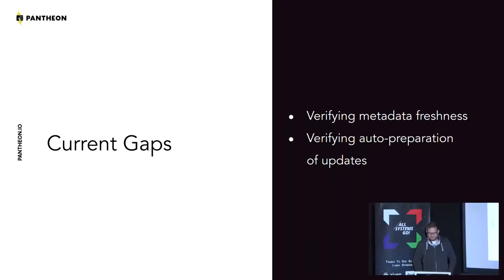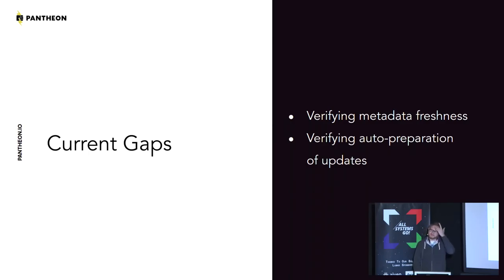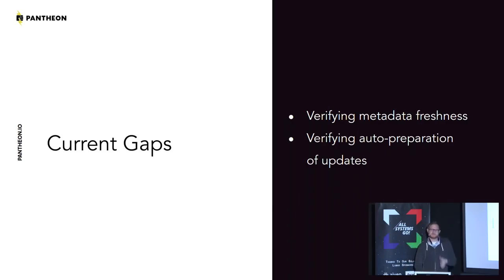I have a few gaps in the work so far. It's hard to verify the metadata freshness for the firmware updater tool — I haven't found an interface for that. I'm also looking to verify that auto-preparation of updates is enabled, because libostree will tell me that an update is staged, but it doesn't as easily tell me whether the system is configured to stage updates automatically. If you turn off auto-updating, you're never going to enter a state where you have an update ready to go, unless the user manually triggers it. The whole idea is to not require the user to explicitly do anything for you to watch the security of the box.